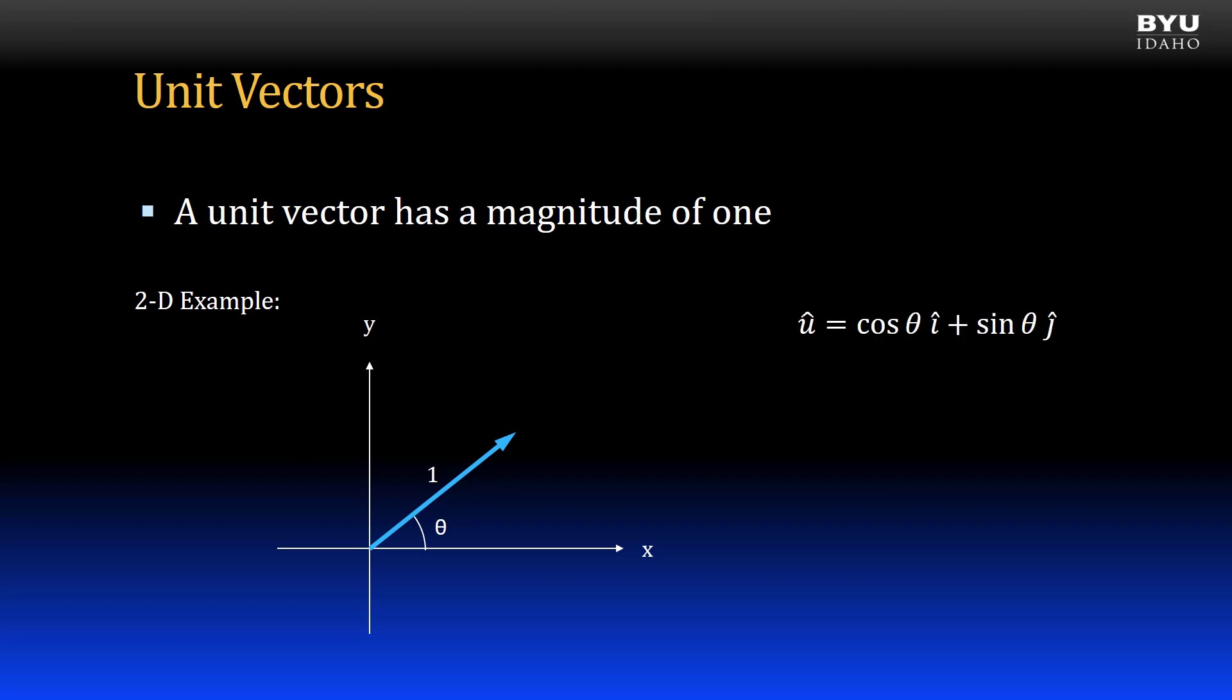I can represent this vector in Cartesian notation as shown. The x component is equal to 1 times the cosine of theta, and the y component is equal to 1 times the sine of theta.